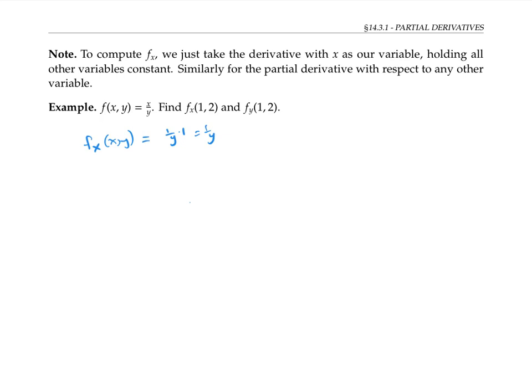If we want to compute f_y at any value (x,y), we think of y as our variable and x is our constant. Since x/y is the same thing as x times y inverse, we can use the constant multiplication rule to keep the x on the side, and the power rule to bring down the negative one and write this as y to the negative two. This simplifies to minus x over y squared.